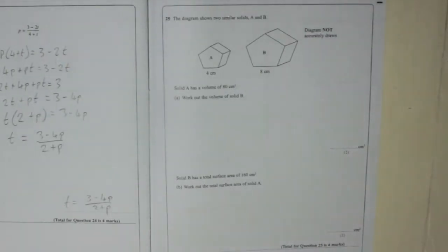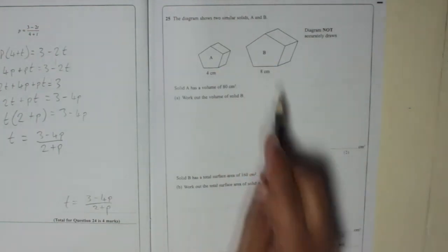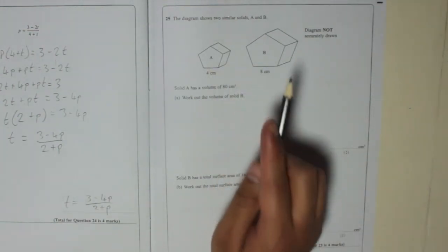Question 25. The diagram shows two similar solids A and B. Similar means they are the same shape, just one is bigger than the other one.